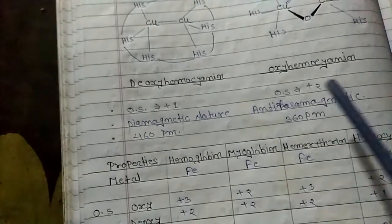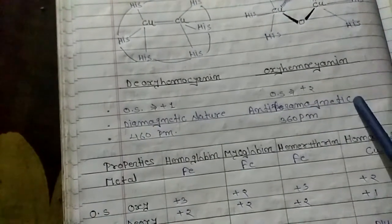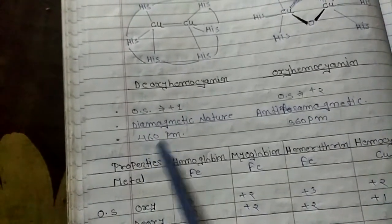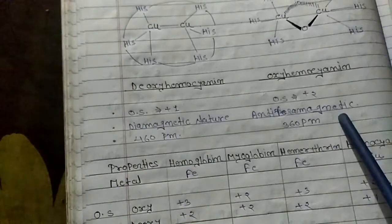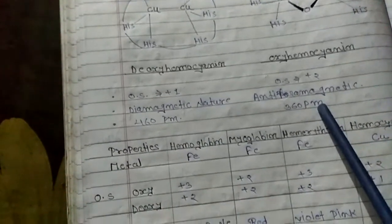It has diamagnetic nature or antiferromagnetic nature, with absorption at 460 nm and 360 nm.